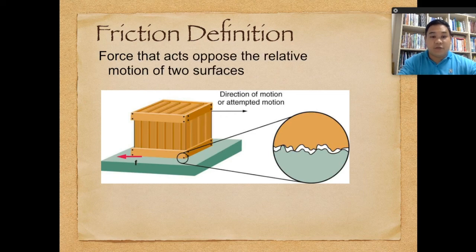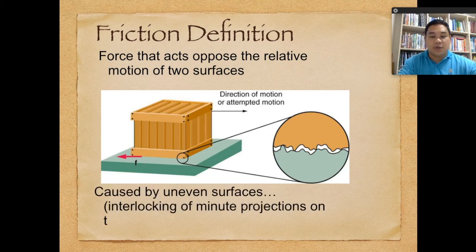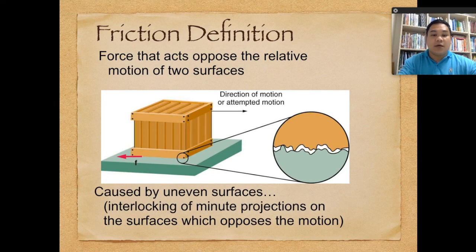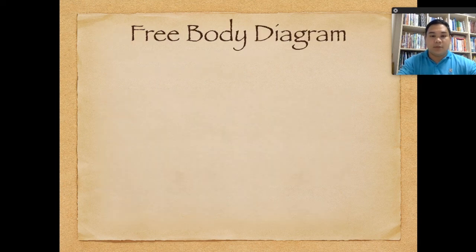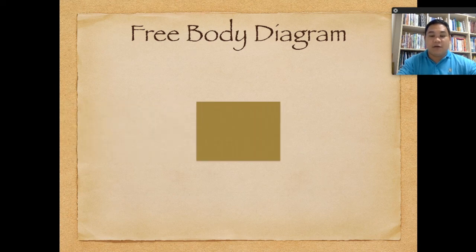We define friction as the force that opposes the relative motion of two surfaces. As we can see in the diagram, it is caused by uneven surfaces, where the interlocking of minute projections on the surfaces opposes the motion.